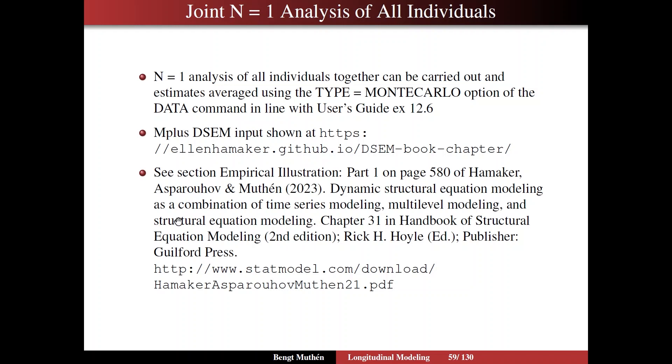It's the Hamaker, Asparouhov, Muthén Dynamic Structural Equation Modeling as a Combination of Time Series Modeling, Multi-Level Modeling, and Structural Equation Modeling, Chapter 31 in the new second edition handbook of SEM. In this section of that chapter called Empirical Illustration Part 1 on page 580 of the book, you will find the discussion of this joint N equals 1 analysis of all individuals. It also describes this type equals Monte Carlo data command feature. You can find this chapter in the pre-publication version at this URL.